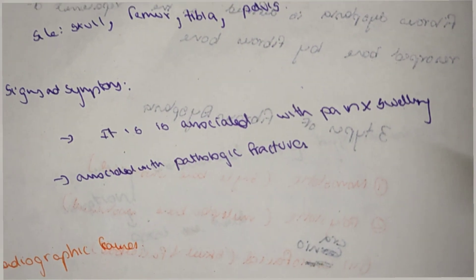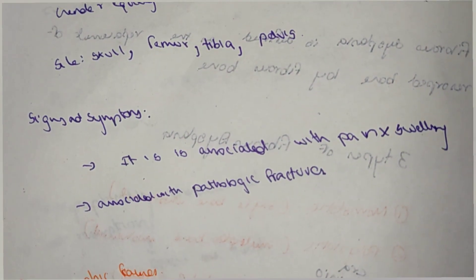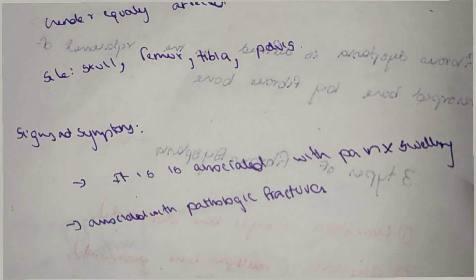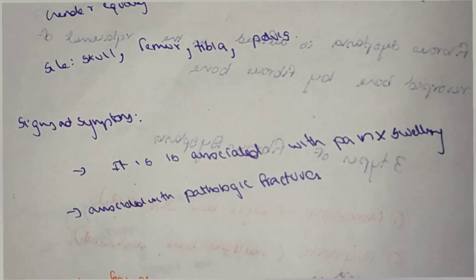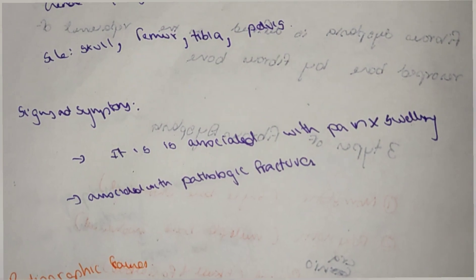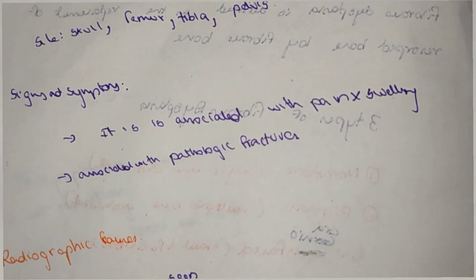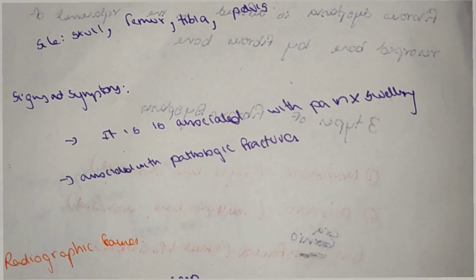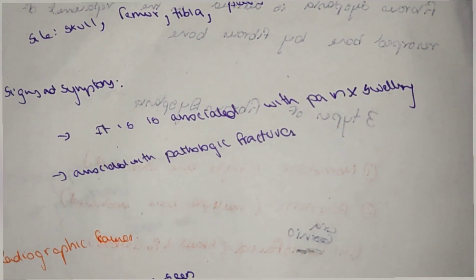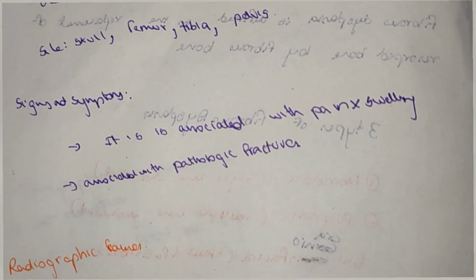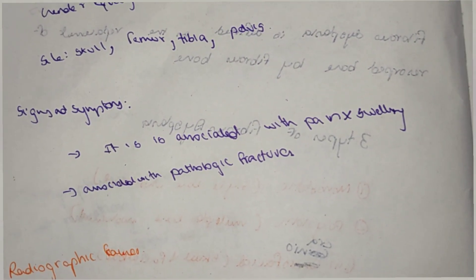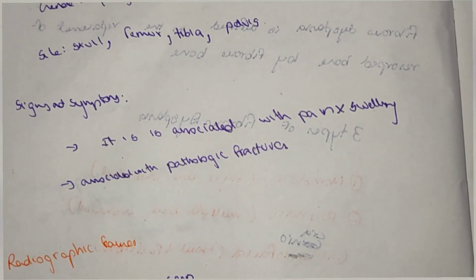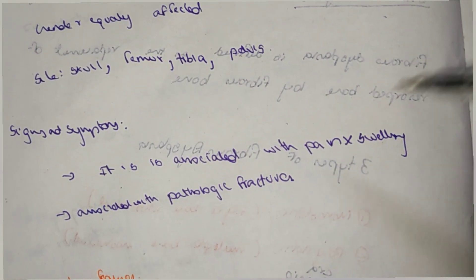Signs and symptoms include pain and swelling. It is also associated with pathological fractures, because the bone formed is fibrous rather than normal bone — fibroblasts form fibrous bone instead of proper osteoblast-formed bone, leading to pathological fractures.